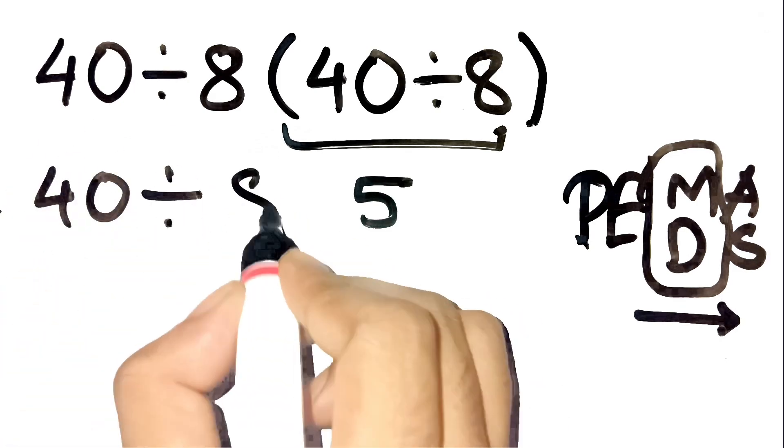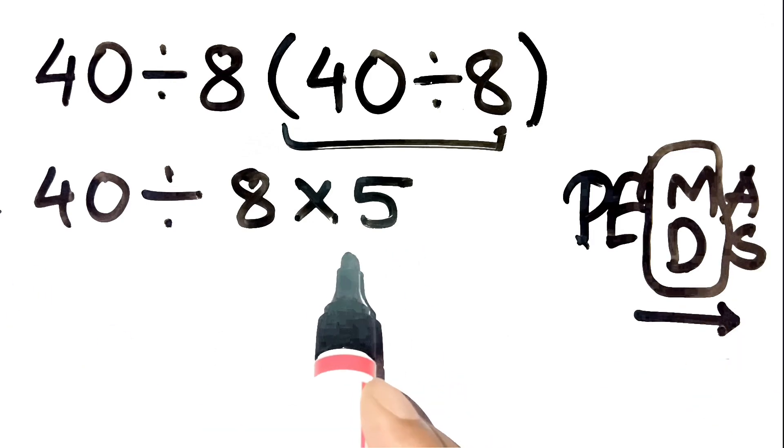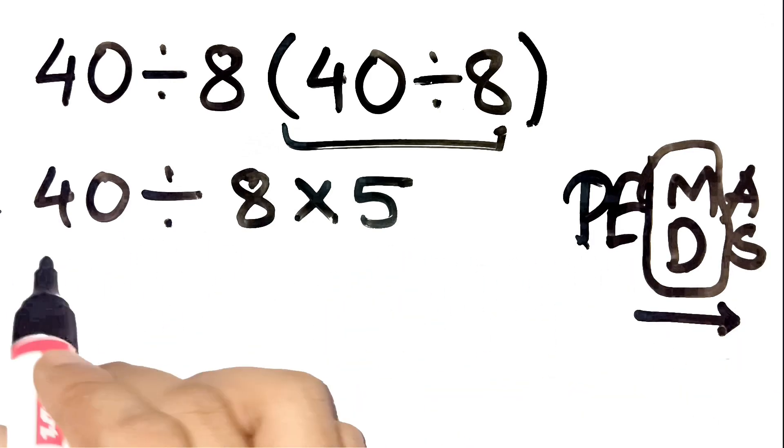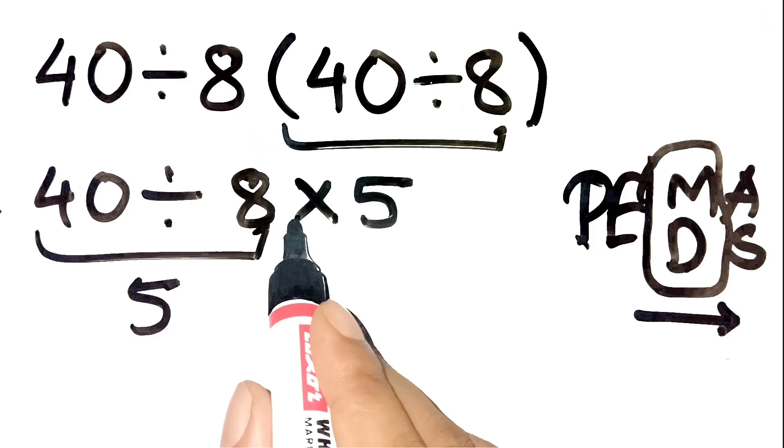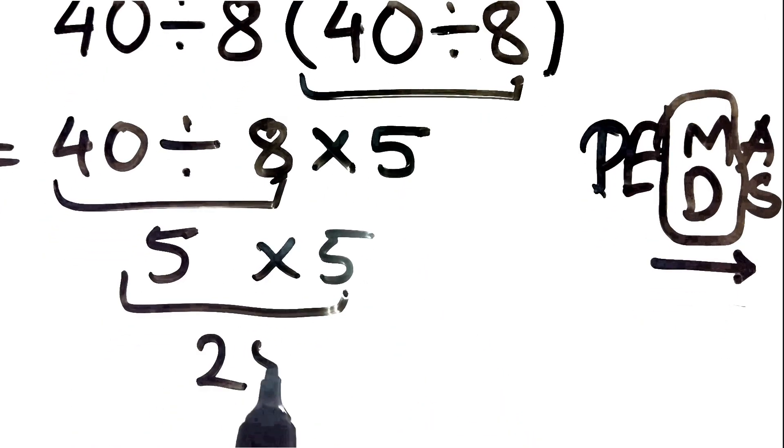Step 2. Left to right. So first, 40 divided by 8 is 5. Then multiply by 5. 5 times 5 and yes, that equals 25.